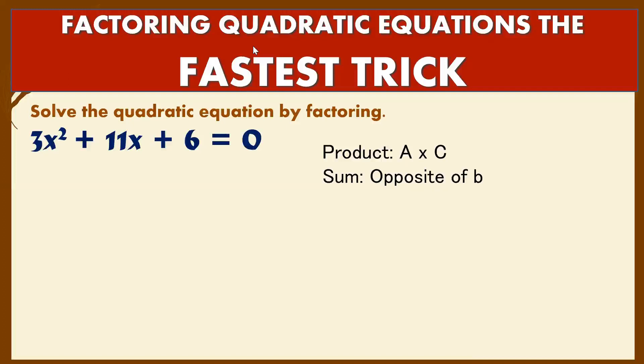The first thing to do is to get the product of your A and C. 6 times 3 is 18. Then step 2 is we are going to take the opposite of your middle term, the opposite of B. 11x, or the opposite of B is negative 11. So write it down, negative 11.